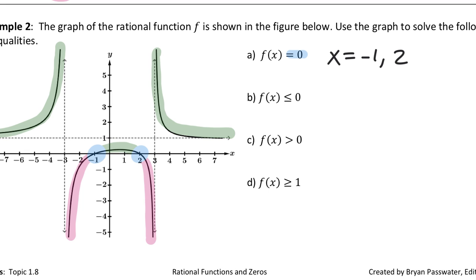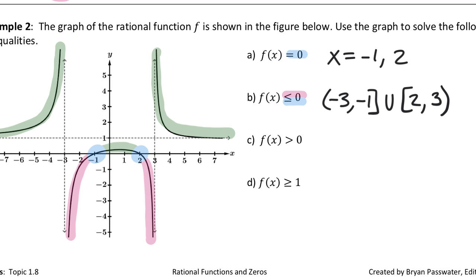Where is this graph less than or equal to zero? We look for where the graph is underneath or exactly on the x-axis. There are two separate pieces: from -3 to -1, and from 2 approaching but never reaching 3 — because the vertical asymptote at 3 stops the graph there, and you get close to but never touch an asymptote.